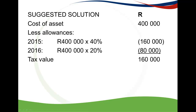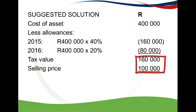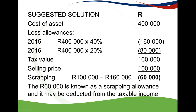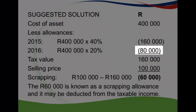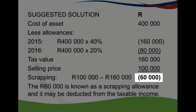We compare the tax value to the selling price. The selling price was R100,000 — less than the tax value of R160,000 — and therefore you will have a scrapping allowance. The scrapping allowance is the difference between the tax value and the selling price. This may be deducted against your taxable income along with the other allowances. In the 2016 year you will get two allowances on this asset: the 2016 year allowance and the scrapping allowance.